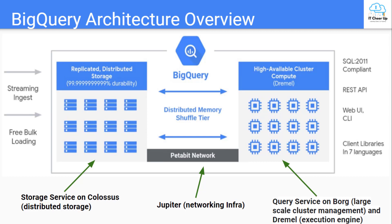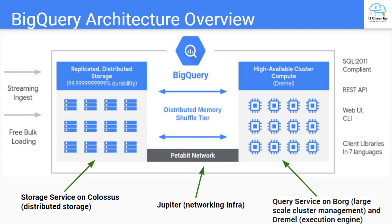BigQuery's storage service automatically shards and shuffles data in the underlying file system to provide a very high level of service at huge scales. Storage service manages the data. The tables are stored as highly compressed columns in Google's Colossus file system, which provides durability and availability.